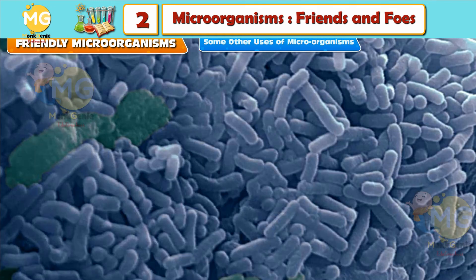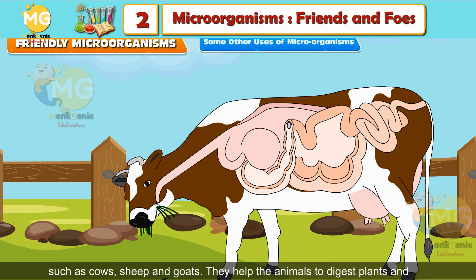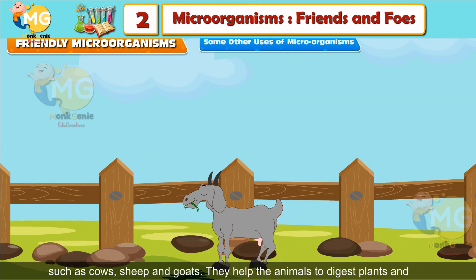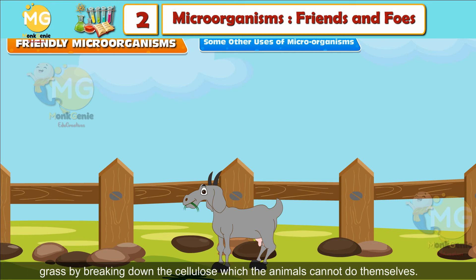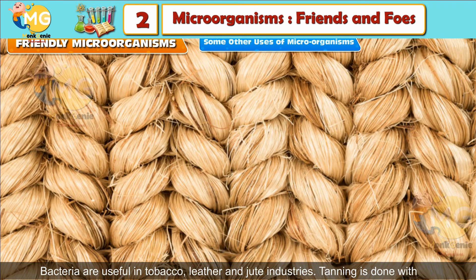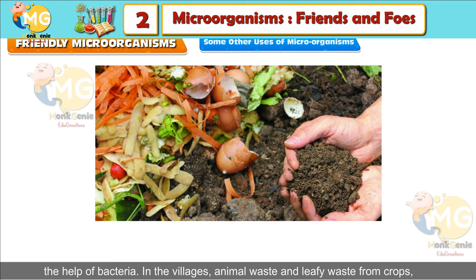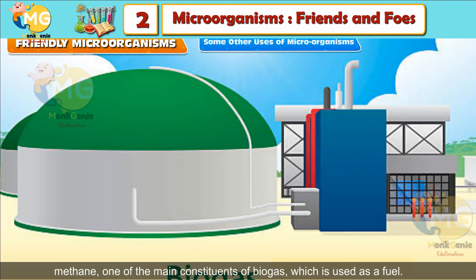Some other uses of microorganisms: Some bacteria and protozoa also live in the digestive system of animals such as cows, sheep and goats. They help the animals to digest plants and grass by breaking down cellulose, which the animals cannot do themselves. Bacteria are also useful in tobacco, leather and jute industries. Tanning is done with the help of bacteria. In villages, animal waste and leafy waste from crops is decomposed by bacteria in the absence of oxygen to produce methane, one of the main constituents of biogas, which is used as a fuel.